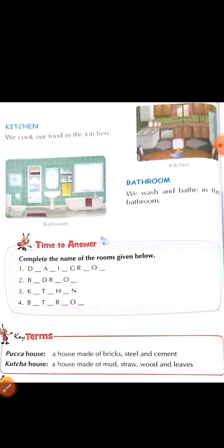Now next, times to answer. Complete the name of the rooms given below. Aapko jo room di hai toh uske letters aapko complete karne hai taaki woh achche se spelling pura ban sake. First is dining room, second is bedroom, third is kitchen, and fourth is bathroom. Aapko ye spellings finish karni hai — chapter ki textbook mein dekh lena, is chapter mein sabhi ke answers diye hai ye spellings ke.